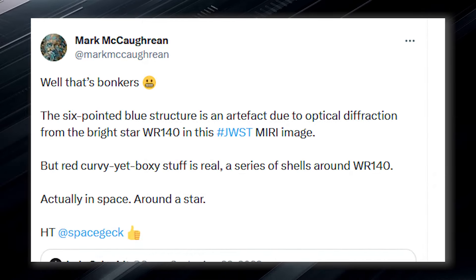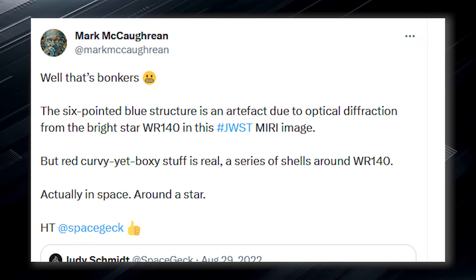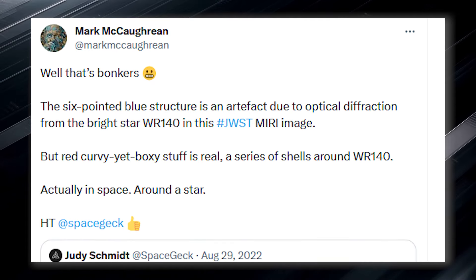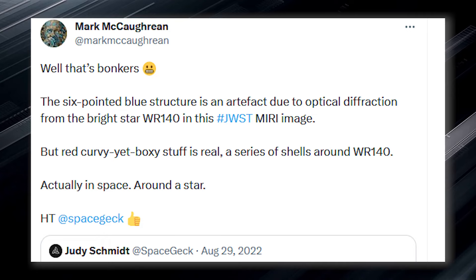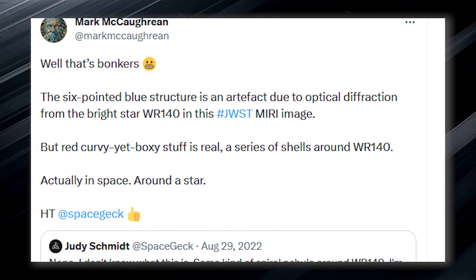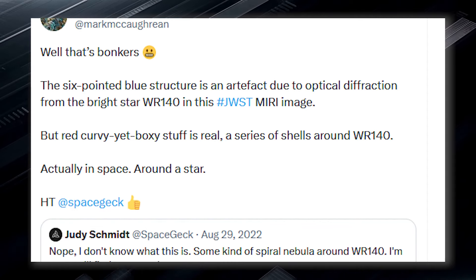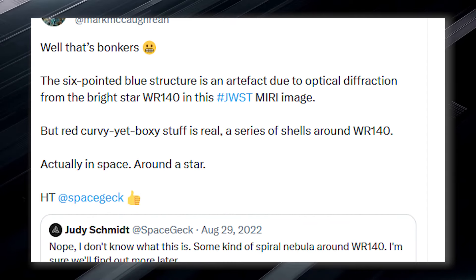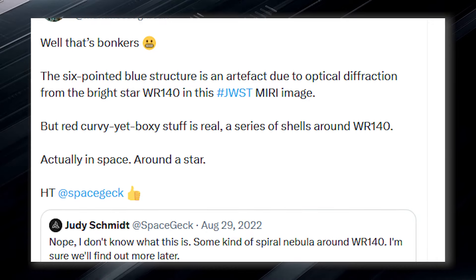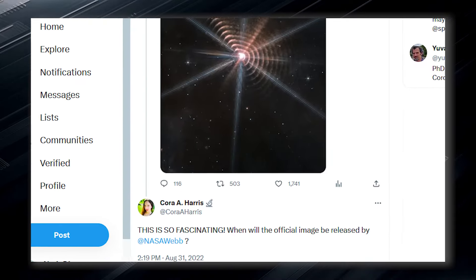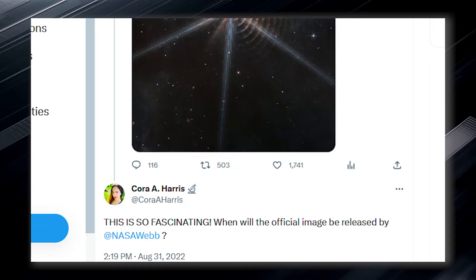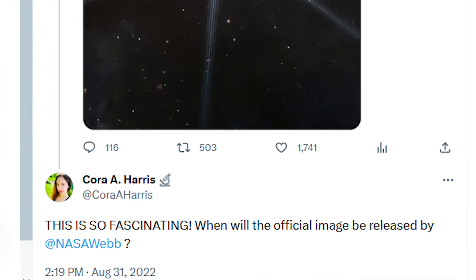He explained that the six-pointed blue structure is an artifact due to the optical diffraction from the bright star WR 140 in the image. However, he noted that the red curvature is real and represents a series of shells around WR 140 in space. Although NASA is expected to have something to say about this, it is expected to make a statement soon.